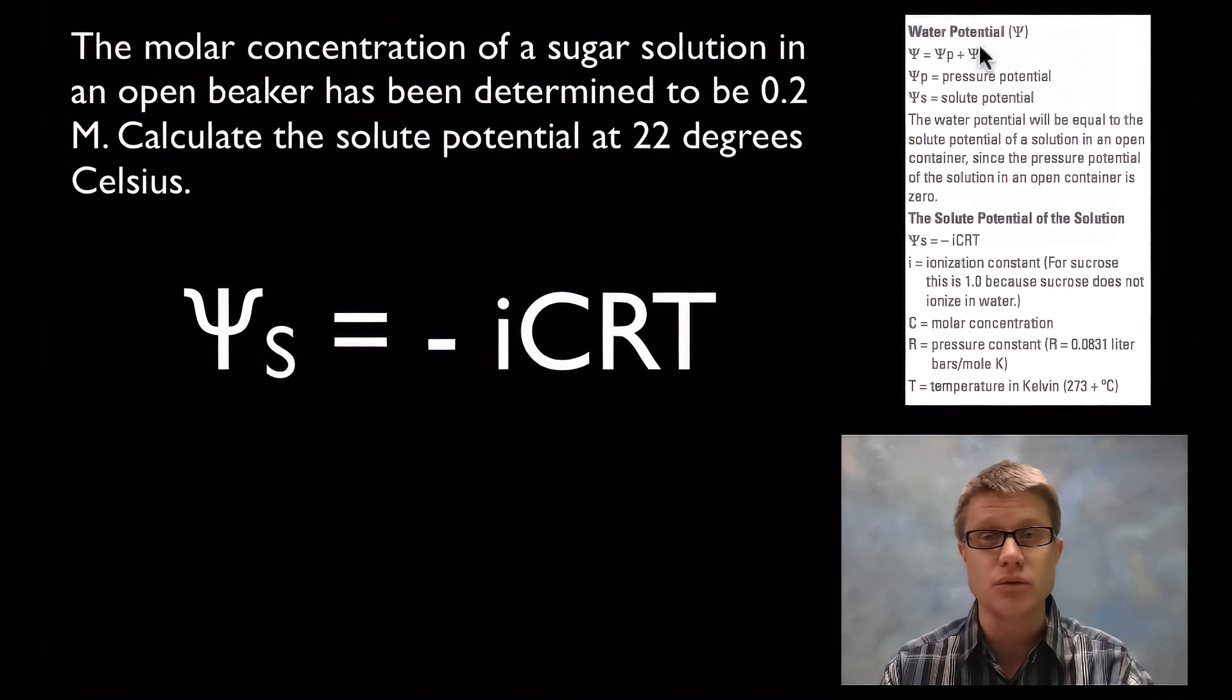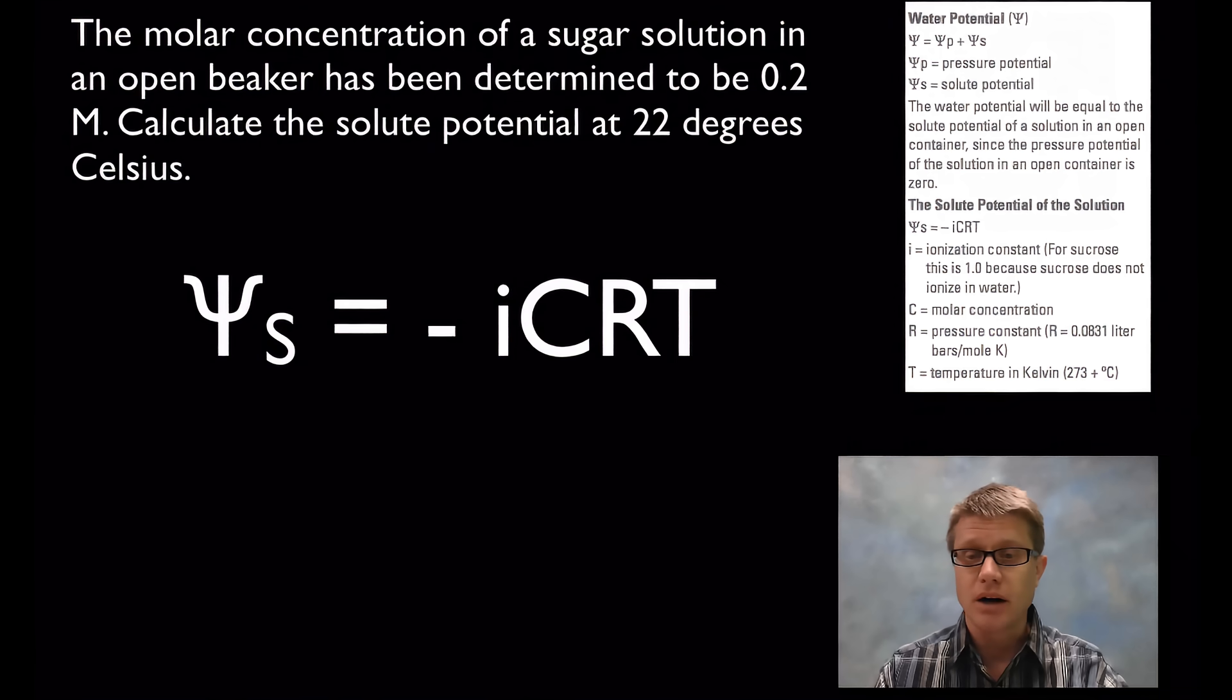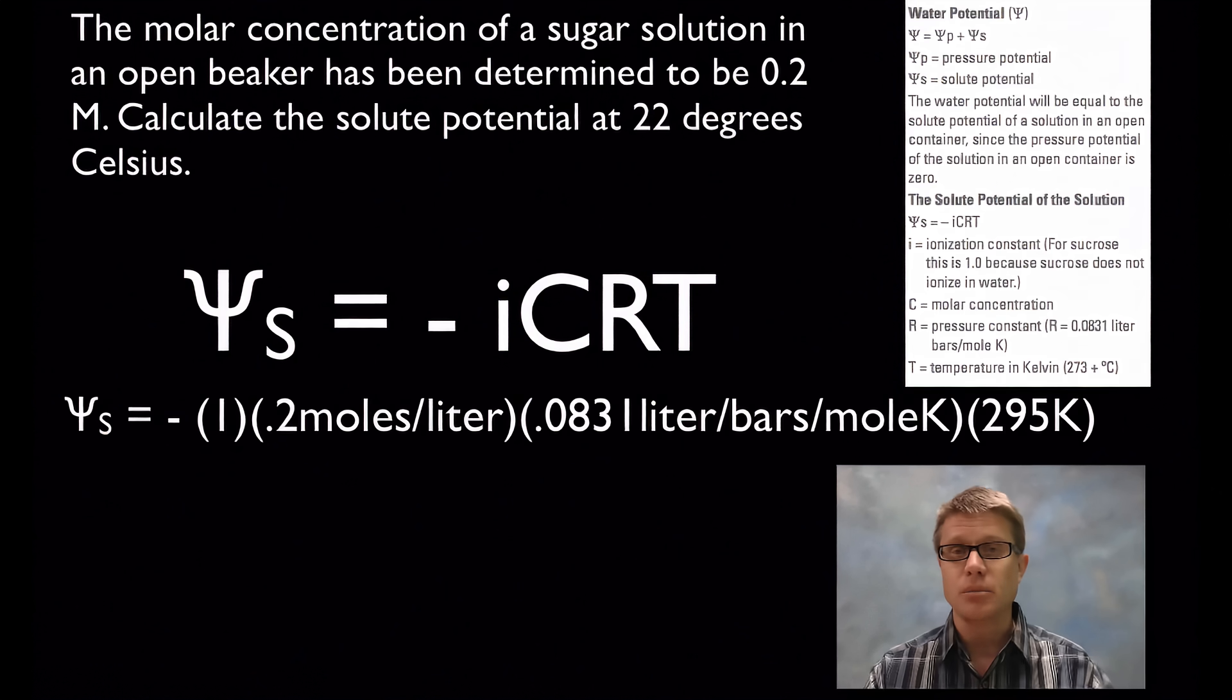On the AP exam you're going to get these two things. They're going to give you water potential, which we already went over. That's equal to the pressure potential plus the solute potential. They're going to explain that here. And then this is even the equation for the solute potential, which is negative I CRT. So how do you solve that? Let me show you how I would solve it. First thing I would do is I would plug everything in.